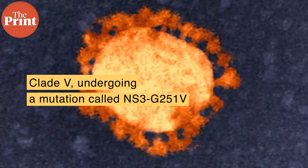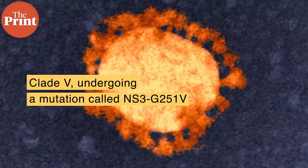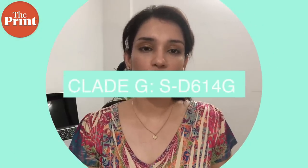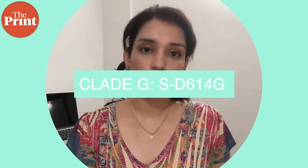One is clade S, which we just discussed with the L-type and S-type mutations. Then there is clade V, undergoing a mutation called NS3-G251V. This means that the NS3 gene's glycine amino acid, indicated by G, is converted to valine, indicated by V, at position 251. Another major clade is clade G, where a variant in gene S changes from D to G at position 614, and the mutation is called S-D614G.